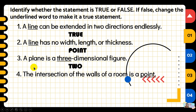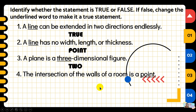Number four: the intersection of walls of a room is a point. The underlined word is 'point.' Look at the walls around you — what is the intersection of walls? It's not just a point. The correct answer is 'line.'